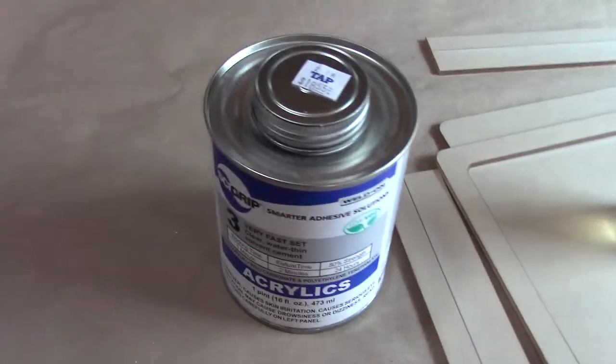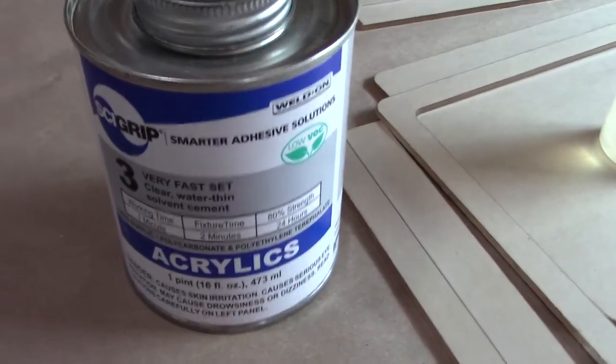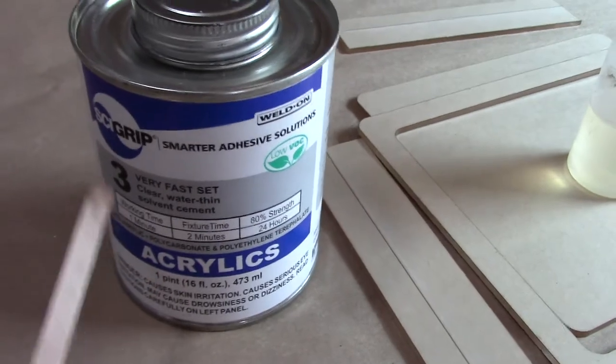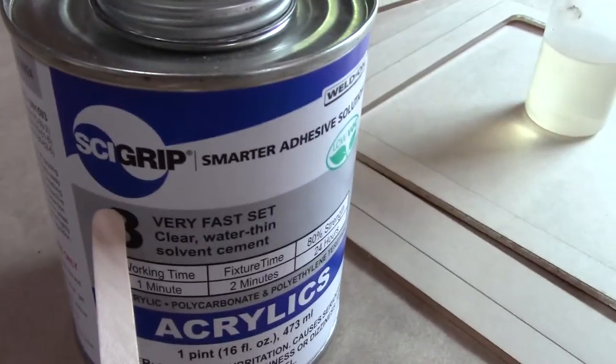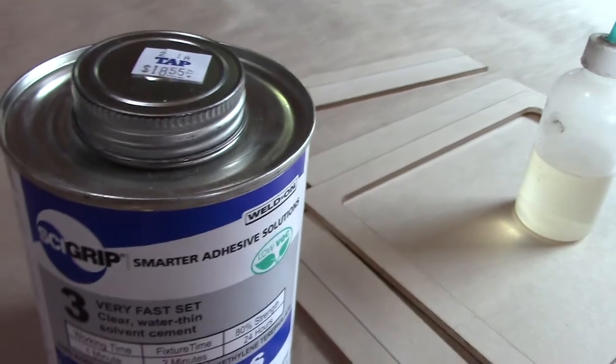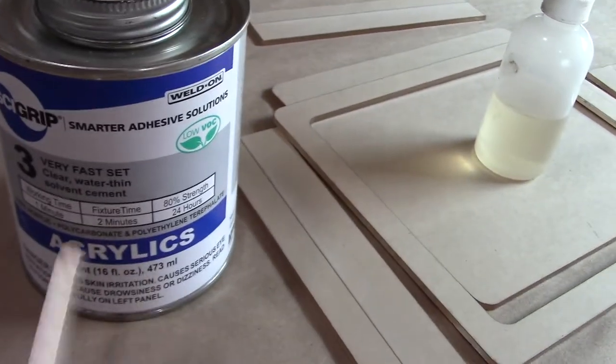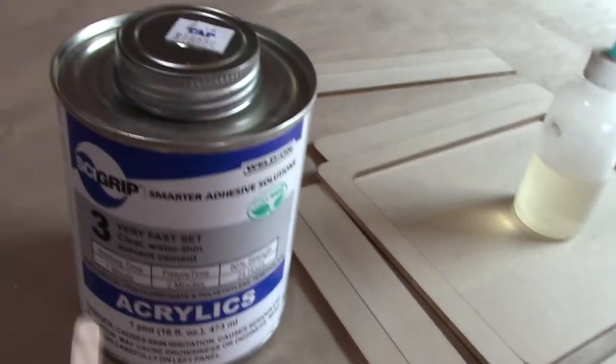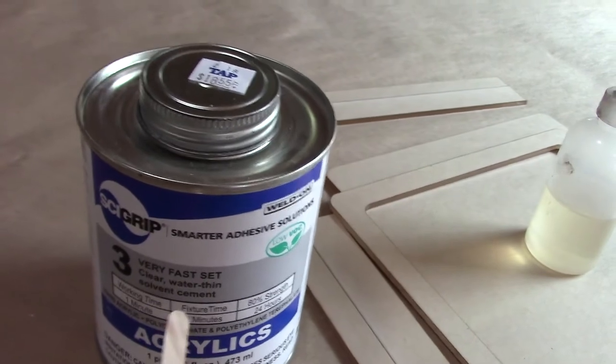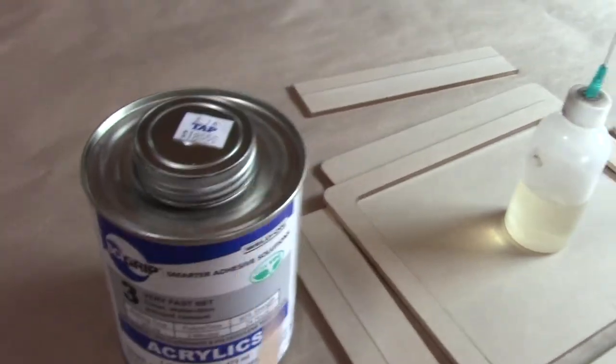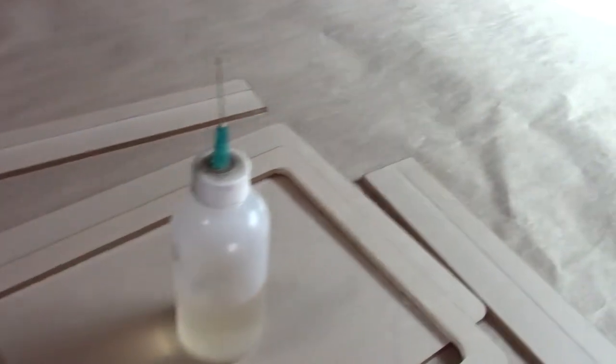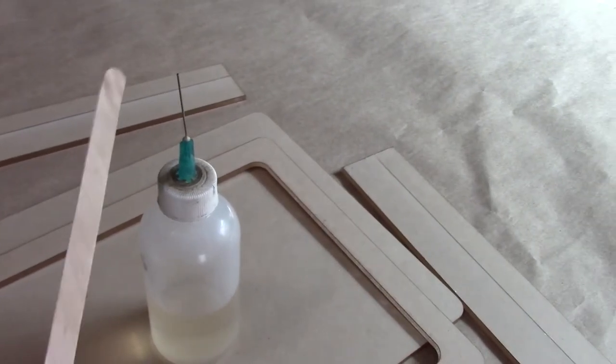For assembling, I'm using acrylic adhesive. This is from Side Drip. Normally I use Weld On. They didn't have any when I went to buy my supplies yesterday. But this, I've used it before, it's a fast set, excellent adhesive for acrylic. And that is dispensed out of a needle applicator.